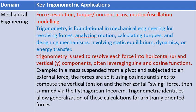For example, in a mass suspended from a pivot and subjected to an external force, the forces are split using cosines and sines to compute the vertical tension and the horizontal swing force, then summed via the Pythagorean Theorem. Trigonometric identities allow generalization of these calculations for arbitrarily oriented forces.